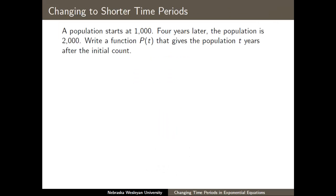Here's one example. A population starts at 1,000, and four years later that population is 2,000. We'd like to model the population not in four-year intervals, but in single-year intervals, so we'll let t be the number of years after that initial count of 1,000.